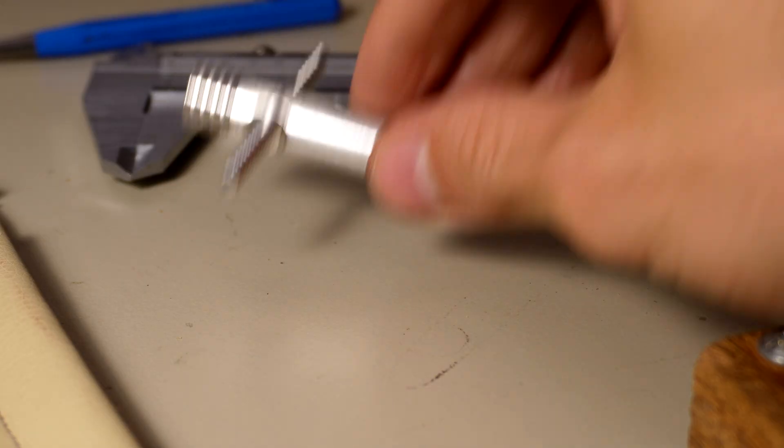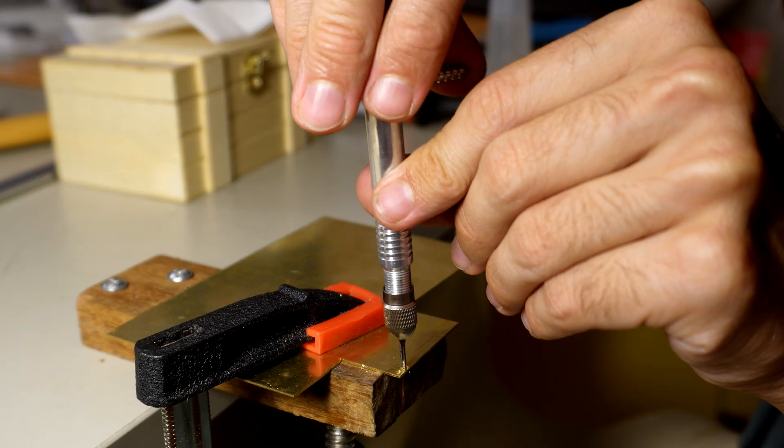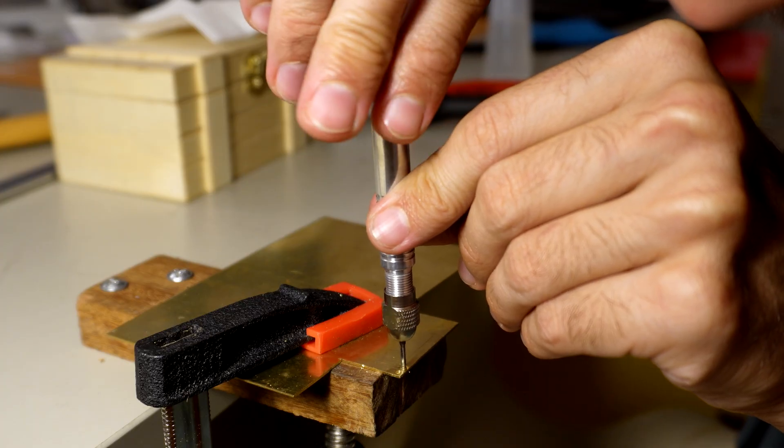Screw everything onto the tool and voila we have a micro-threaded cutting tool. Let's test it by making a small screw and a matching nut.